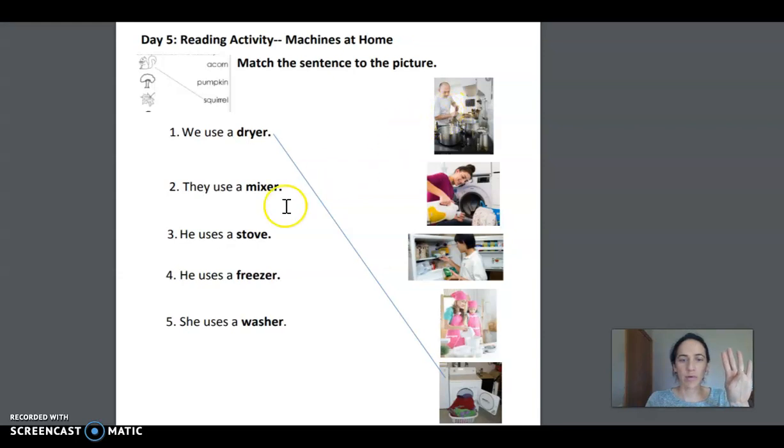You read number four. He uses a freezer. Which picture shows a freezer? Yes. Good job. You read number five. She uses a washer. Where is the washer? Yes. Great job.